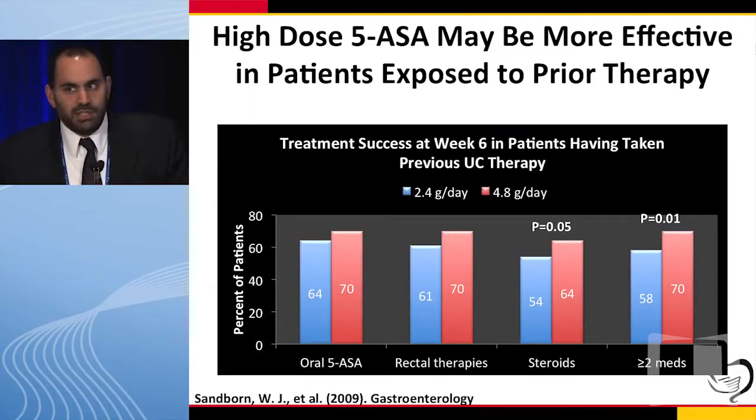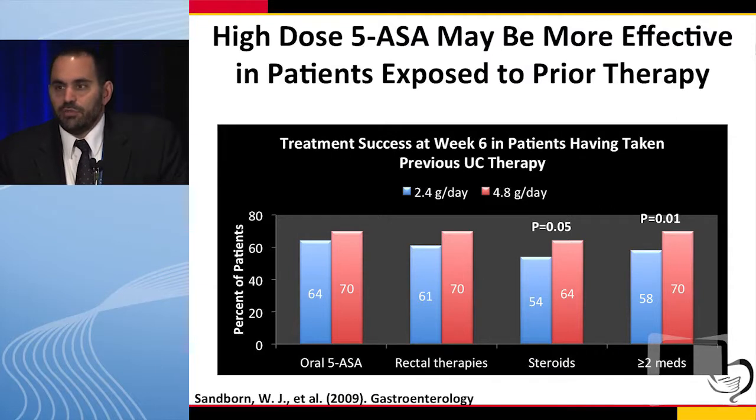The ASCEND-3 trial highlights this, comparing 2.4 grams a day of Asacol HD to 4.8 grams in patients with moderate UC. It was a non-inferiority trial with many patients enrolled. In general, the results showed no difference between 2.4 and 4.8 grams. However, if you look at certain subgroups — particularly those treated with steroids in the past or those treated with two or more medications for their ulcerative colitis — the higher-dose group did better. So one message here is that if you've induced a patient into remission with prednisone, perhaps your transition point would be to a higher-dose 5-ASA based on this subgroup analysis.